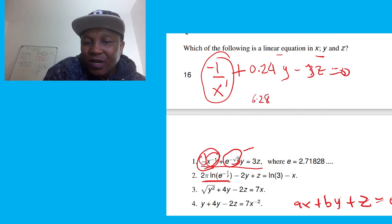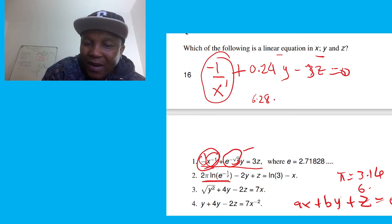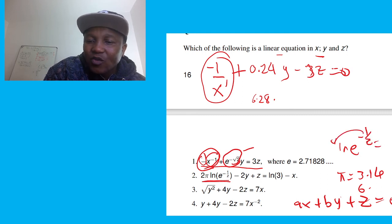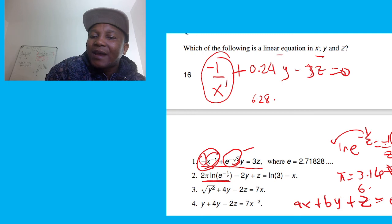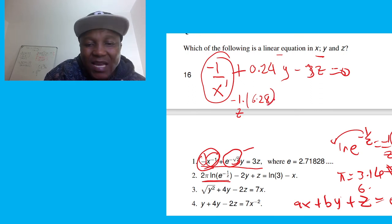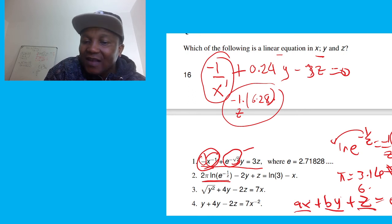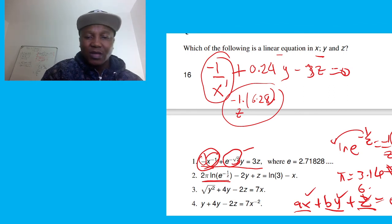The second equation also cannot be linear because of the ln(e^(−1/z)) term. That simplifies to −1/z, since ln(e) = 1. So −(1/z) × 1 = −1/z. A variable in the denominator is not allowed in a linear equation, so this one is non-linear. Even though 2π is just a number, that −1/z ruins it.